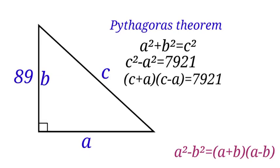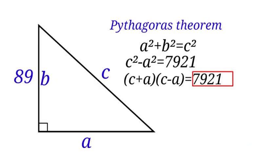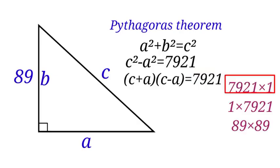Pay close attention here. Since we have two factors on the left-hand side, we are also going to write the right-hand side, which is 7,921, as a product of two factors. 7,921, the products are, one is 7,921 times 1, the second one is 1 times 7,921, and another one is 89 times 89.